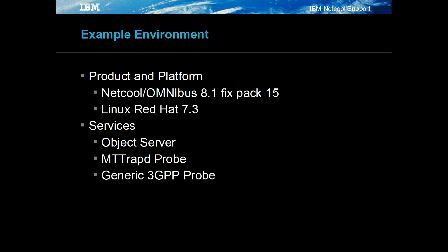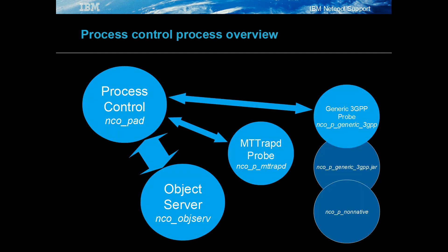There are three processes being placed under process control. The process control process, NCO_PAD, manages processes and performs external actions. For this example, the NCO_PA.conf file will be configured to manage an object server, an MTRAP D probe, and a generic 3GPP probe.